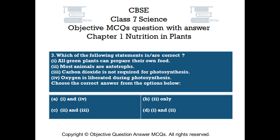Question number 3. Which of the following statements is/are correct? 1. All green plants can prepare their own food. 2. Most animals are autotrophs. 3. Carbon dioxide is not required for photosynthesis. 4. Oxygen is liberated during photosynthesis. Choose the correct answer: Option A: 1 and 4. Option B: 2 only. Option C: 2 and 3. Option D: 1 and 2.